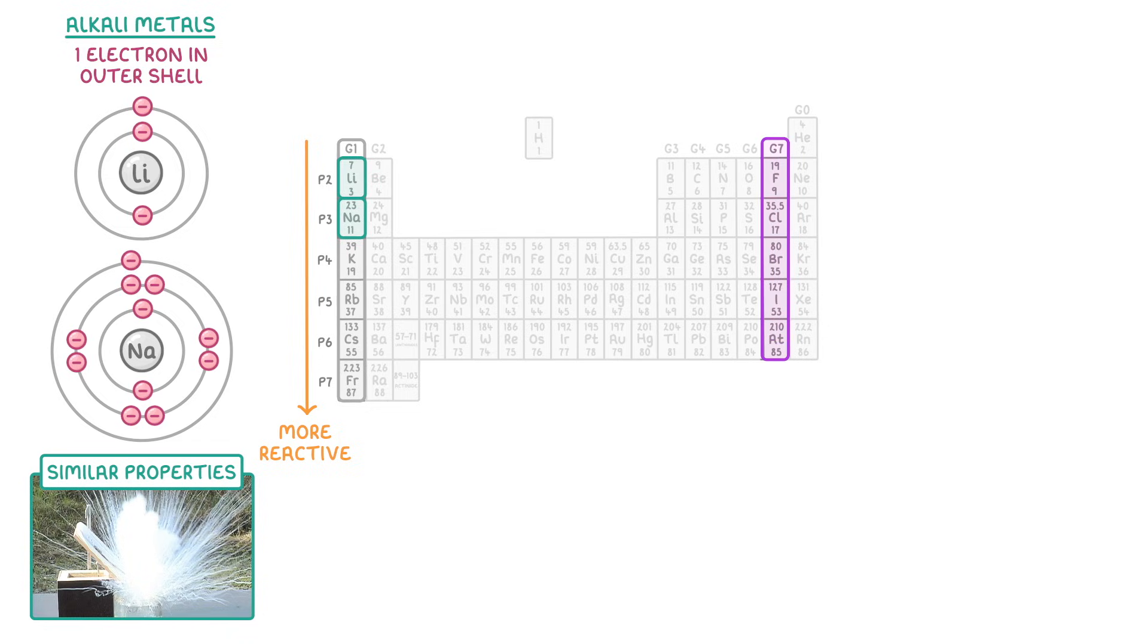Group 7 elements meanwhile, which we call halogens, all have 7 electrons in the outer shell. Although these elements become less reactive as you go down the group.